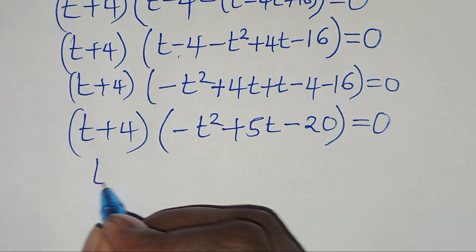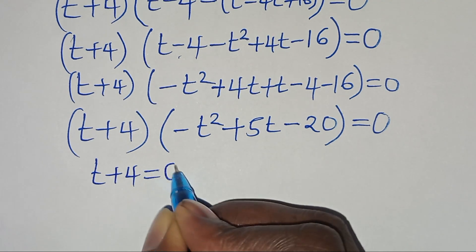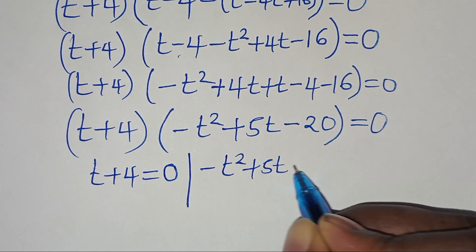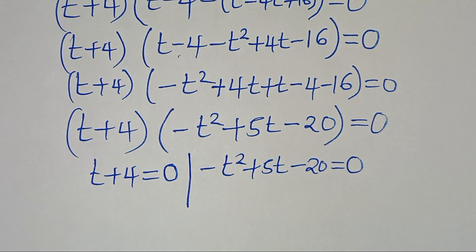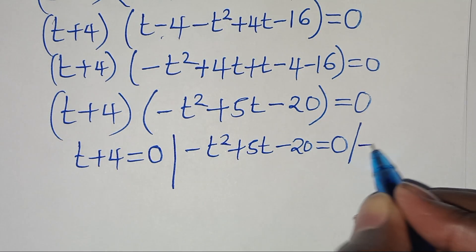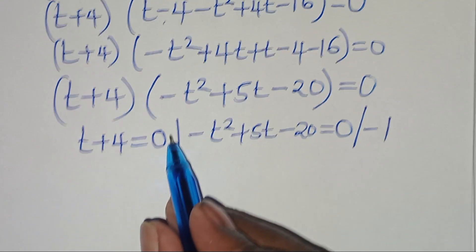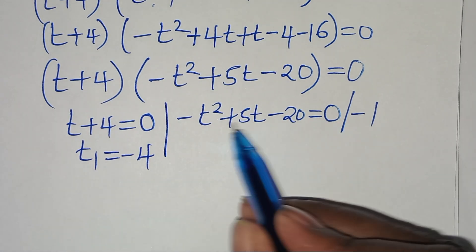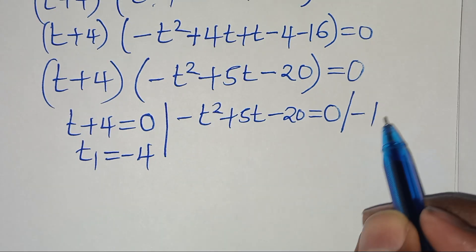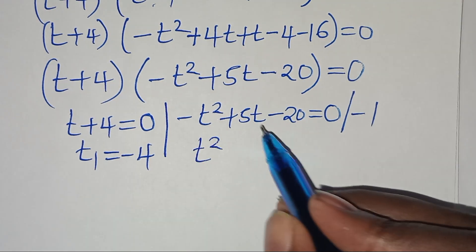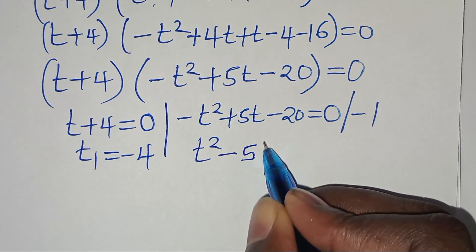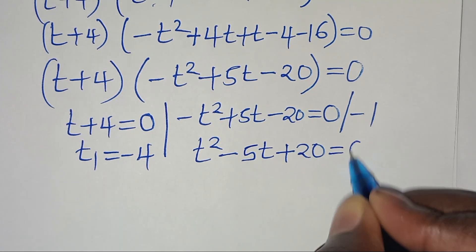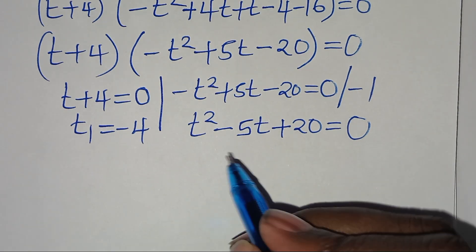Setting each factor to zero: first, t plus 4 equals 0 gives us t₁ equals minus 4. Second, minus t squared plus 5t minus 20 equals 0. Dividing everything by minus 1, we get t squared minus 5t plus 20 equals 0.